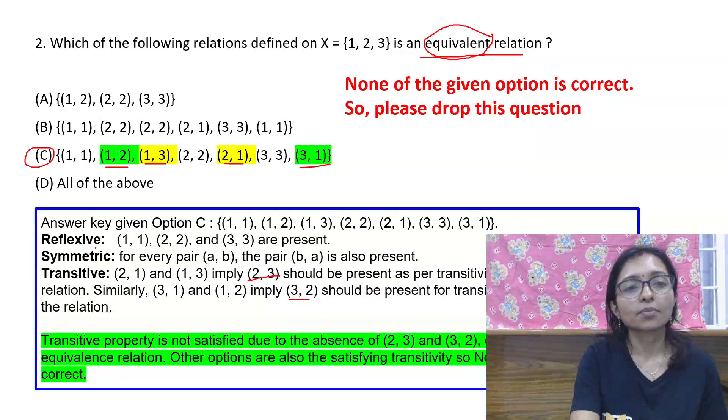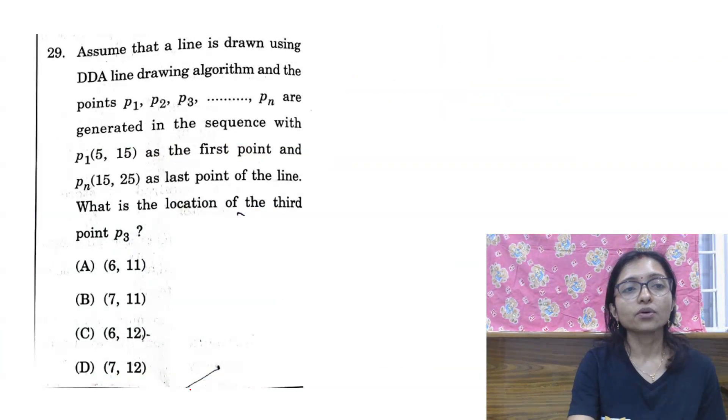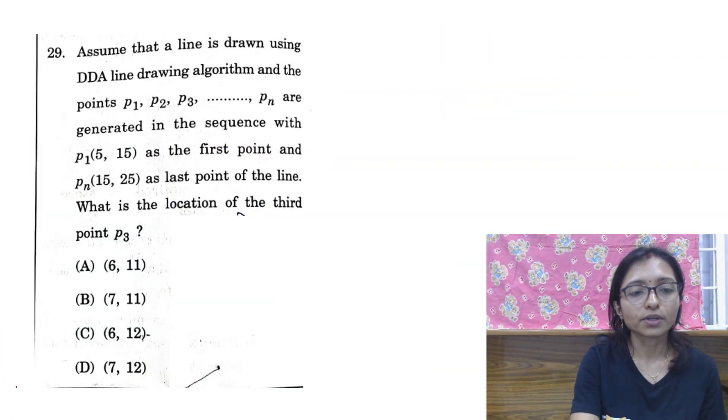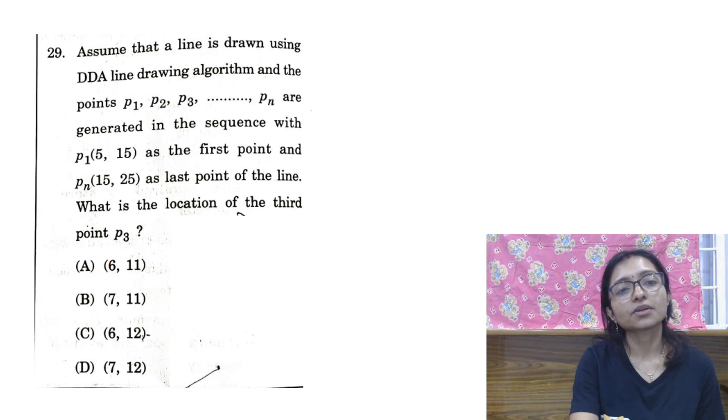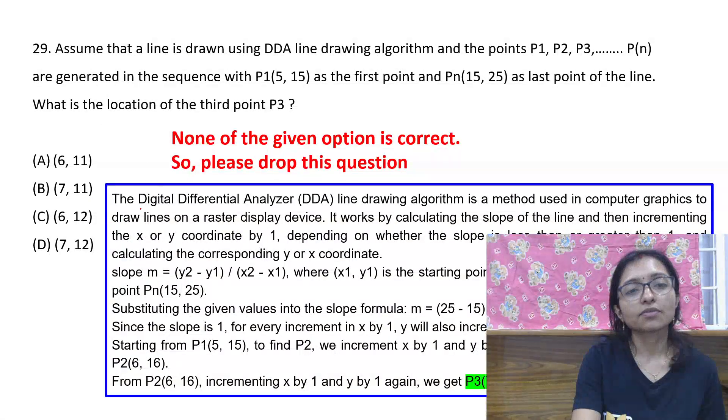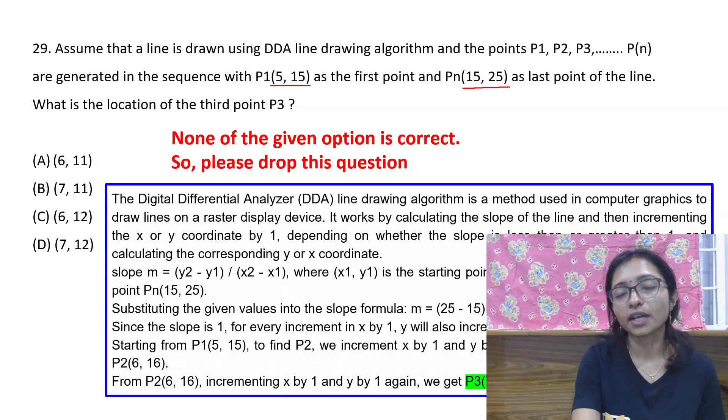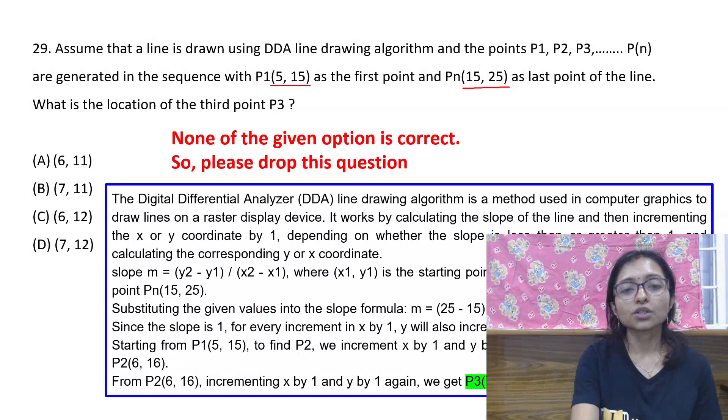Now question number 29. As you can see, this is also wrong. In this question, if you are applying the algorithm, it is given (5,15) and P(n) is (15,25). According to the algorithm, after applying this formula...